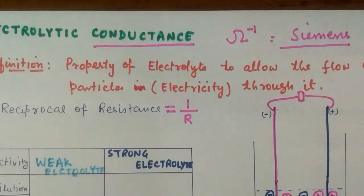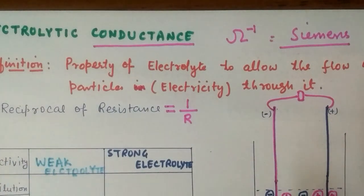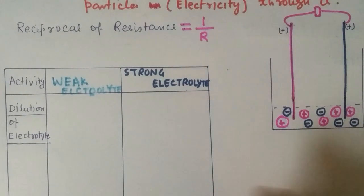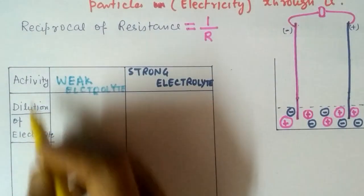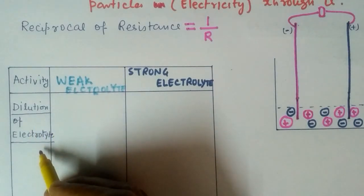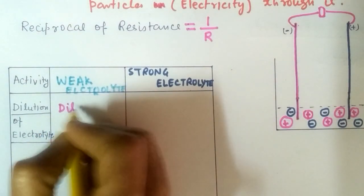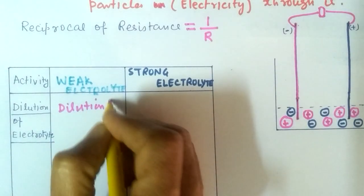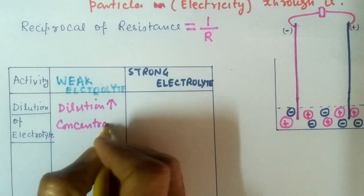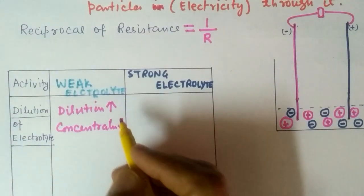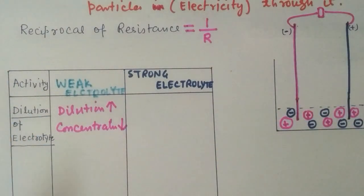Now we come to the effect of dilution or concentration of electrolyte on the conductance of the electrochemical cell. Here we have a table. In the first column, we have the activity — that is, dilution of electrolyte. We are diluting the electrolyte, making its concentration less. When dilution increases, volume increases and concentration decreases.